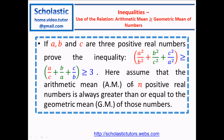Here is the question. If A, B, and C are 3 positive real numbers, prove the inequality: A squared over B squared plus B squared over C squared plus C squared over A squared is always greater than or equal to A over C plus B over A plus C over B, which is always greater than or equal to 3. Assume that the arithmetic mean AM of N positive real numbers is always greater than or equal to the geometric mean GM of those numbers.